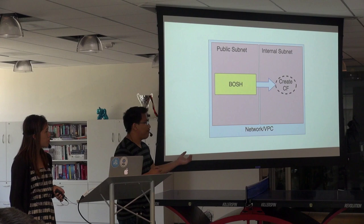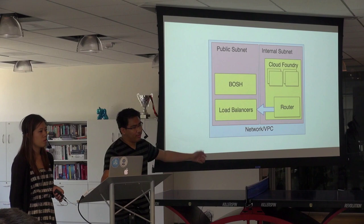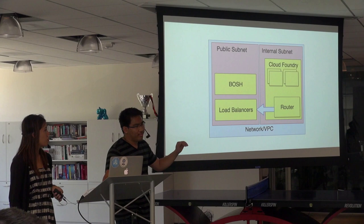Usually you want to route internet access to your apps, so you'll create a load balancer. And then usually once you deploy Cloud Foundry, you'll attach your router to your load balancer, so that any traffic from the internet goes into your load balancer, to your router, and then to your apps.